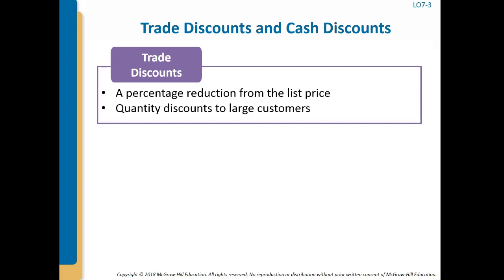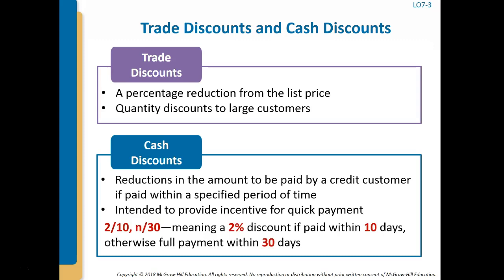There are two types of discounts companies commonly offer: trade discounts and cash discounts. Trade discounts are a percentage reduction from the list price — for example, a $2,500 part sold at a 10% discount is recorded at the agreed-upon price of $2,250. Trade discounts are not variable consideration; they simply specify the transaction price. Cash discounts, often called sales discounts, represent reductions in the amount to be paid if the customer pays within a specified period.